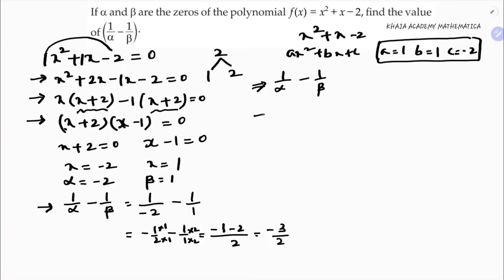Taking the LCM as alpha beta, I multiply beta in the first term and alpha in the second term, giving beta minus alpha over alpha beta. We know alpha times beta equals c by a. For beta minus alpha, I'll use algebraic identities.